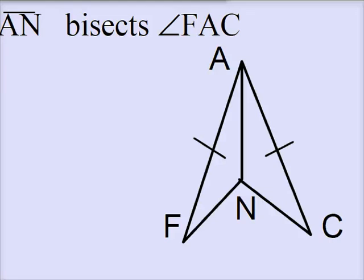This last proof is dealing with something similar to what we've seen before, but in a slightly different way. Here we've got a bisector, however it's not a segment bisector, it's an angle bisector.